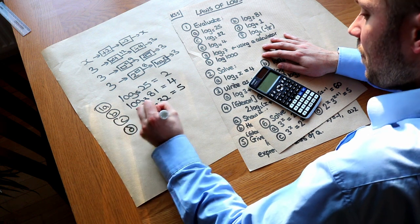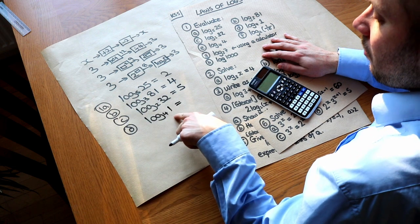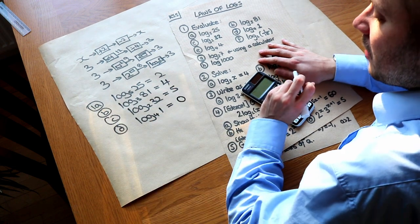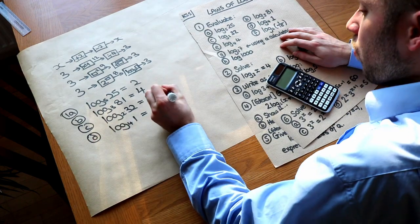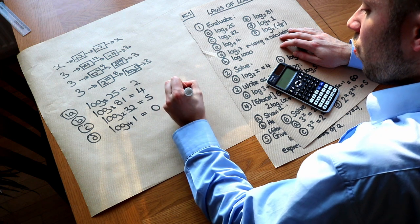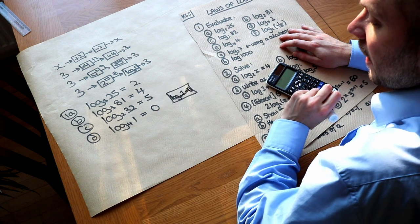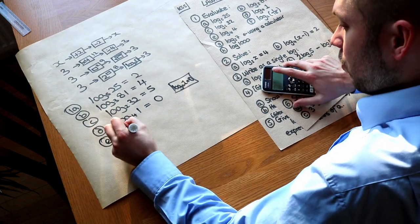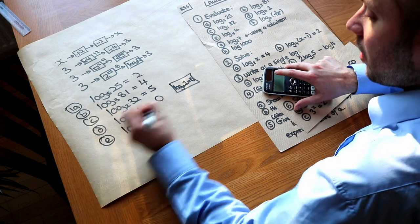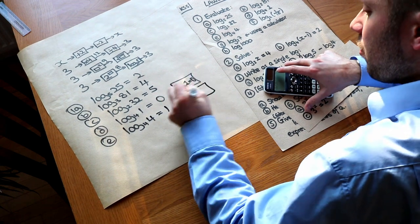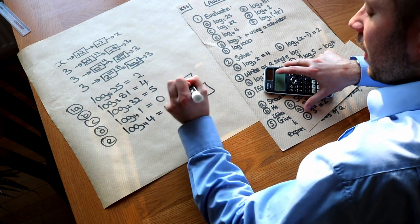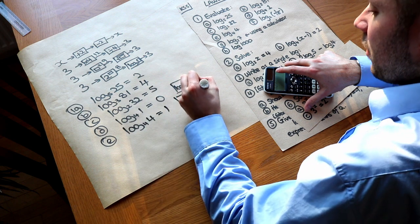Log base 4 of 1: well 4 to the power of what is 1? It's 0 — 4 to the power of 0 gives you 1. And in fact whenever we do log of any base of 1 we always get 0, so that is a key result. What about log base 4 of 4? 4 to the power of 1 is 4, so that gives you 1. Another key result: log base A of A always gives you 1.